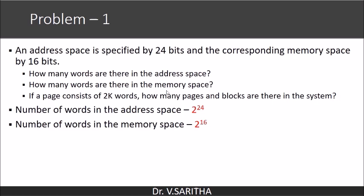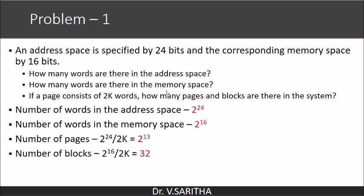If a page consists of 2K words, how many pages and blocks are there in the system? Here we are assuming that the page size and the block size are same. So 2 power 24 by 2K is nothing but 2 power 13 that gives you the number of pages, and 2 power 16 by 2K gives you 32, that is number of blocks.